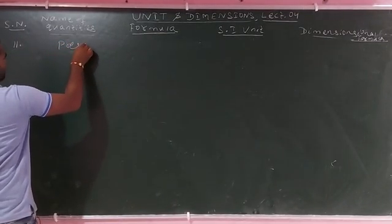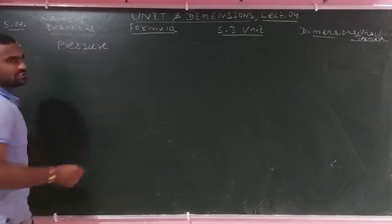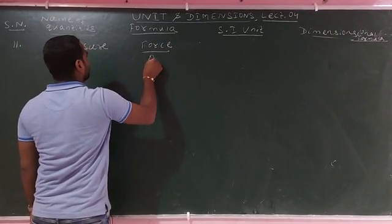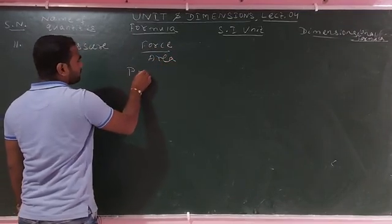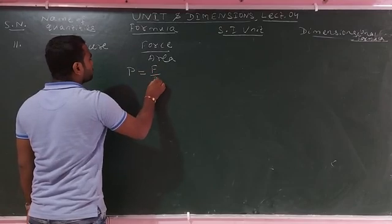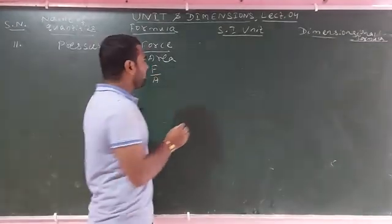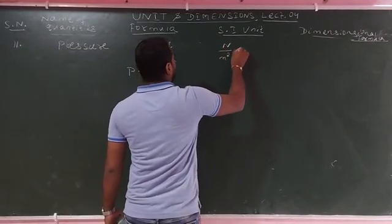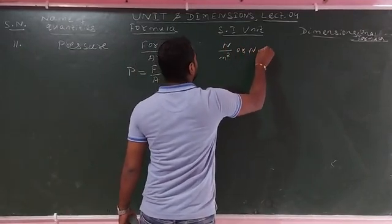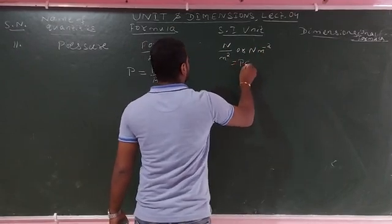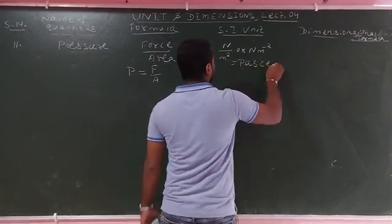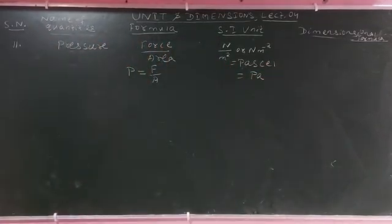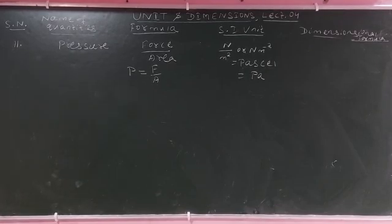The next quantity is Pressure. The formula for pressure is force divided by area. Symbolically, P equals force divided by area. In SI units, force is in Newton and area is in meter square. So the SI unit of pressure is Newton per meter square, which simplifies to Pascal. Symbol is Pa.